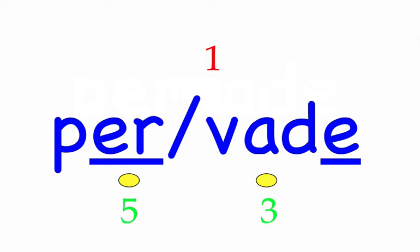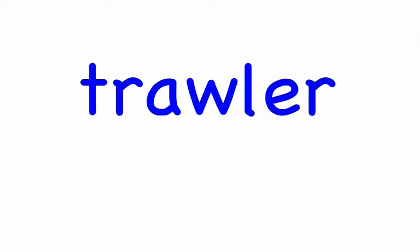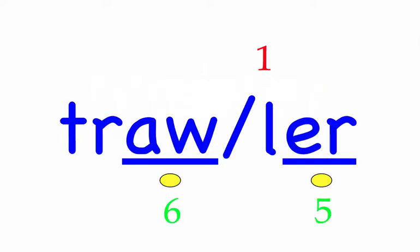Trawler. The tiny fishing trawler did ply the waters. First syllable: traw, three sounds, T-R-aw. Second syllable: ler, two sounds, L-ur. Trawler — mark the word. Note that W is part of the vowel team A-W, so when counting consonants between vowels we count between the A-W team and E-R, and we have one consonant. Thus syllable rule one applies.